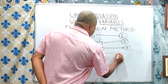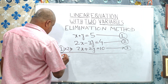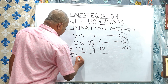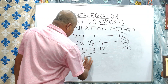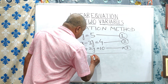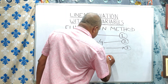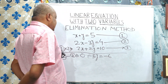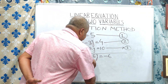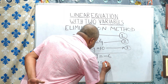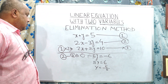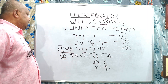Now, if we subtract equation 3 from equation 2, that is equation 2 minus equation 3, the x terms cancel to 0. We get minus 5y is equal to minus 6, which gives us 5y is equal to 6.